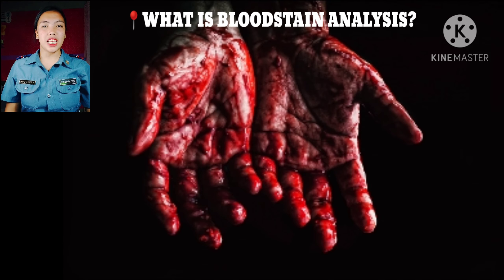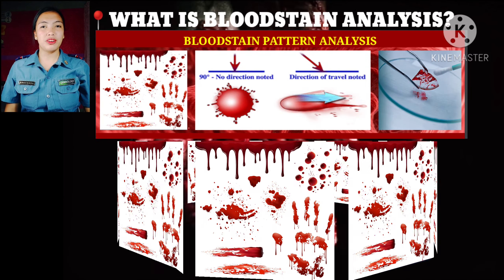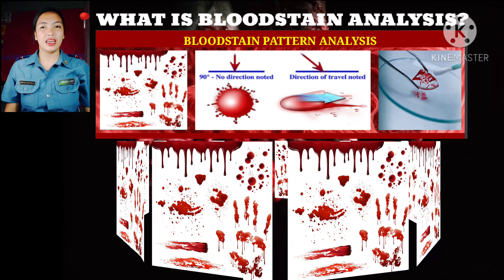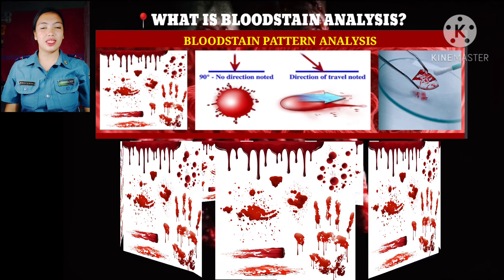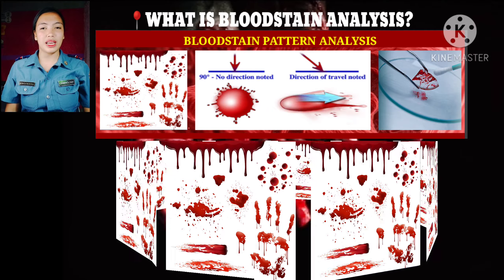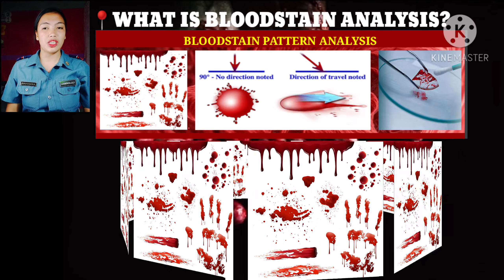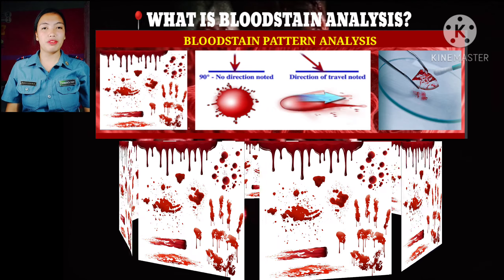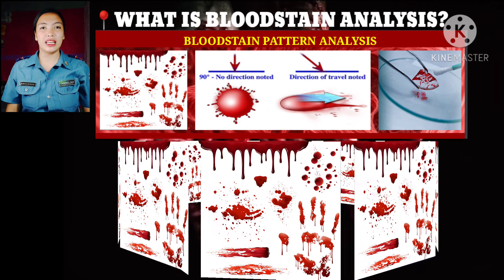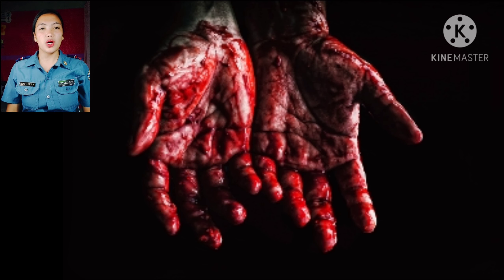What is bloodstain pattern analysis? It is the interpretation of bloodstains at a crime scene in order to recreate the actions that caused the bloodshed. Analysts examine the size, shape, distribution, and location of bloodstains to form an opinion about what did or did not happen at the crime scene.